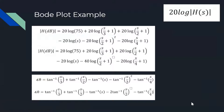As seen on the top of the slide, 20 log of each section of the transfer function provides the values for the Bode plot. The first part is 20 log of 75, which is the constant. Then we add 20 log of (s/3 + 1) and 20 log of (s/2 + 1), which are both zeros. The poles are subtracted: minus 20 log of s, then minus 40 log of (s/2 + 1) — the squared brings the exponent to the front making it 40 — and finally minus 20 log of (s/4 + 1).